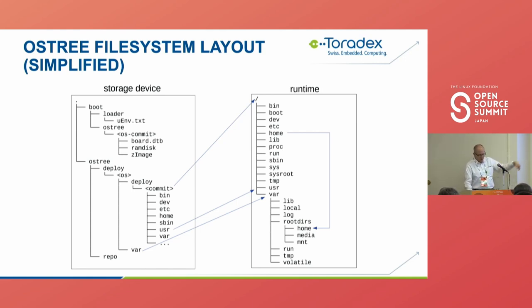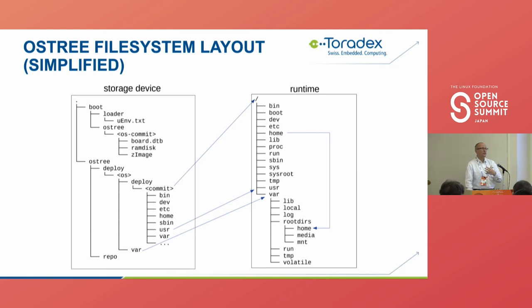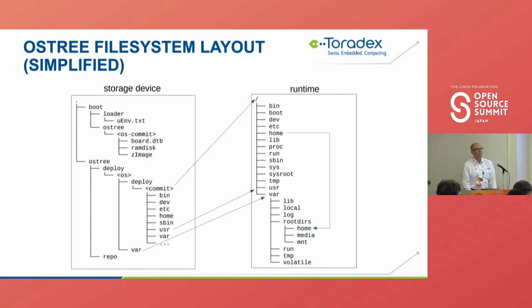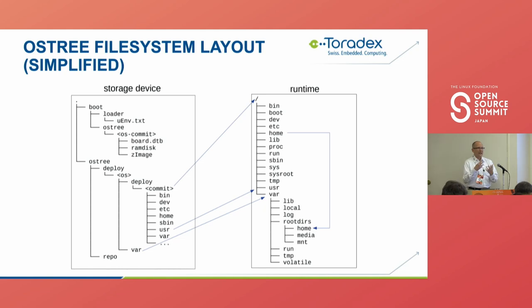The var directory is also important. In the repository view, var is actually outside of the commit object, so it's persistent data essentially unmanaged by OSTree. Anything you put there will persist across versions and updates — this is where we store container volumes, configuration, and any user data. There's also special handling for /etc: there's a read-only version and a runtime read-write version. On any update, the system does a three-way merge between the previous version, the new version being installed, and what's currently on the device, so any field changes are maintained.